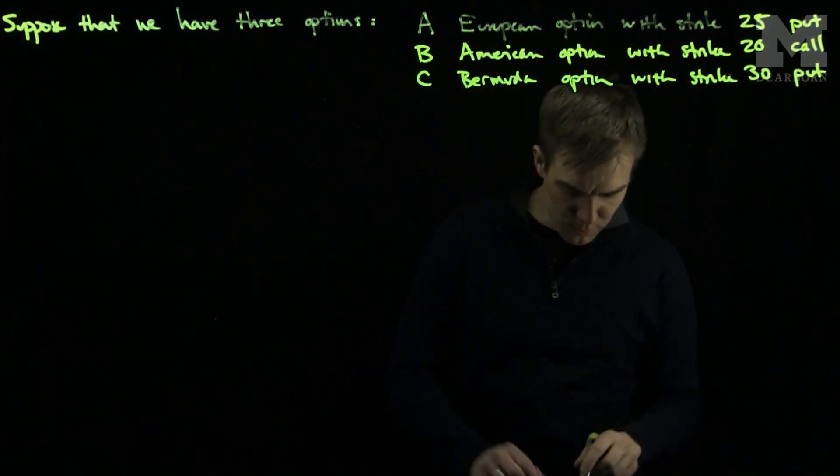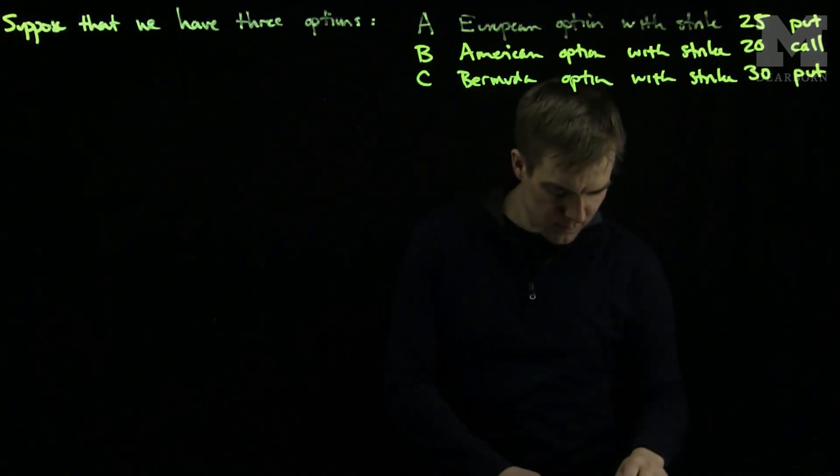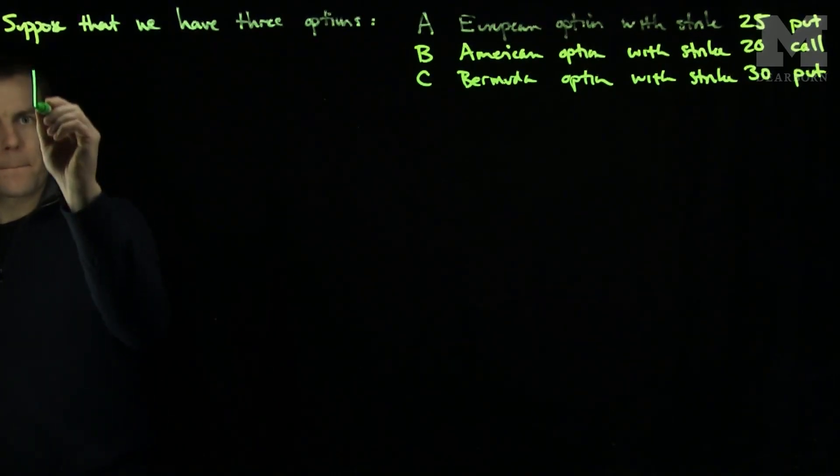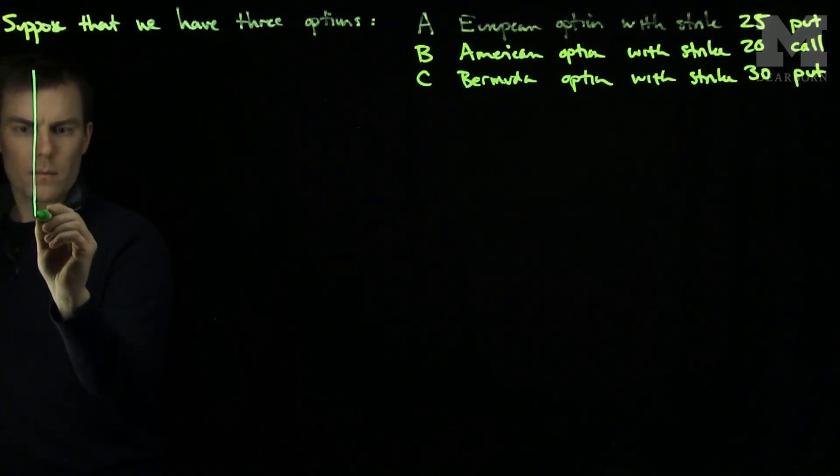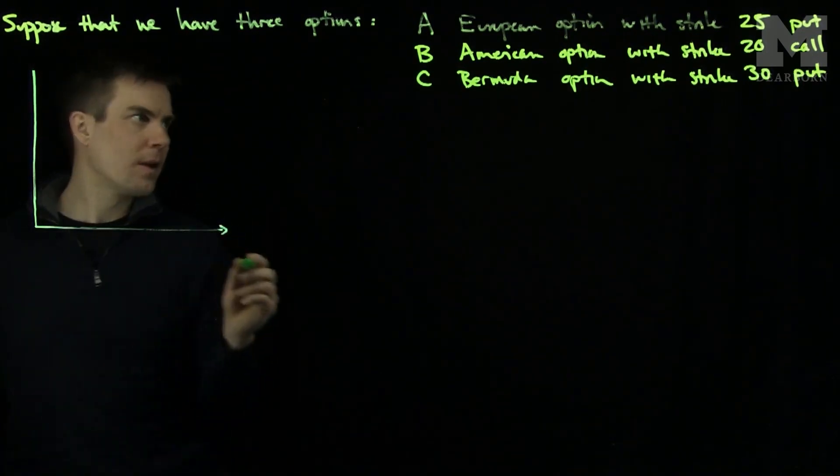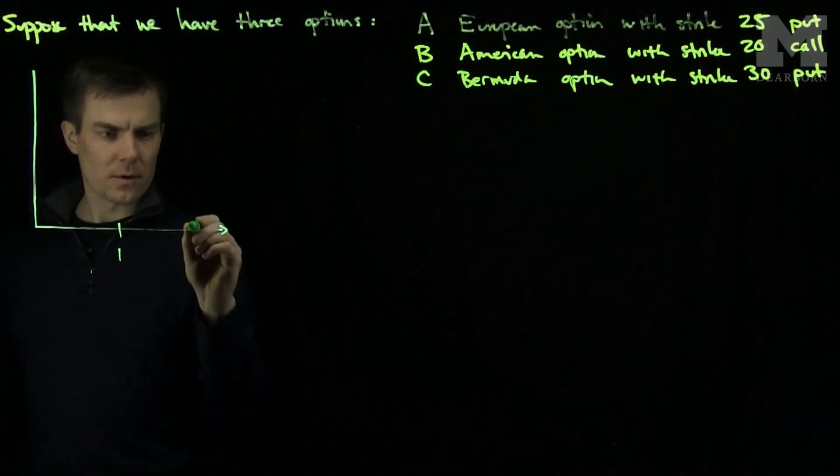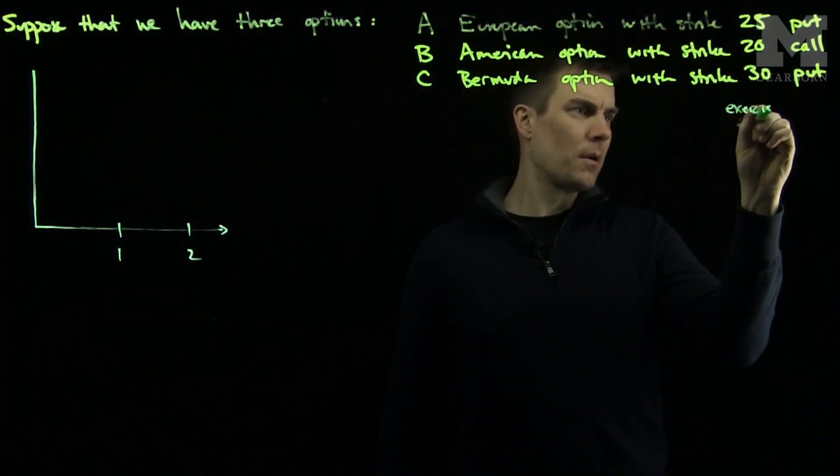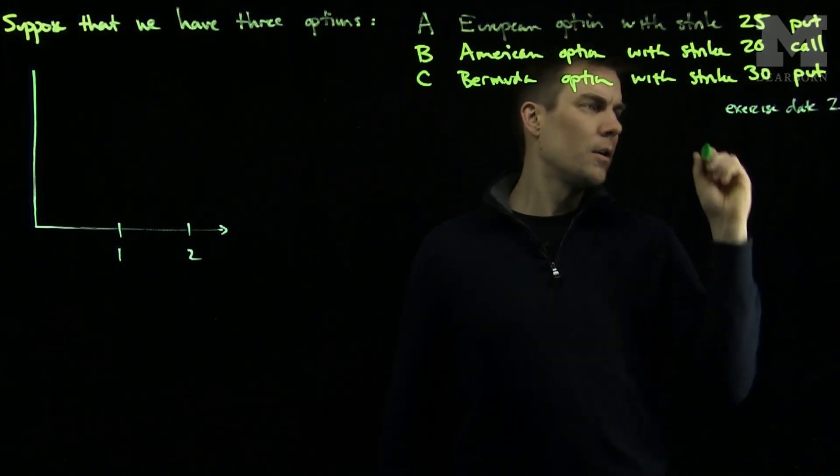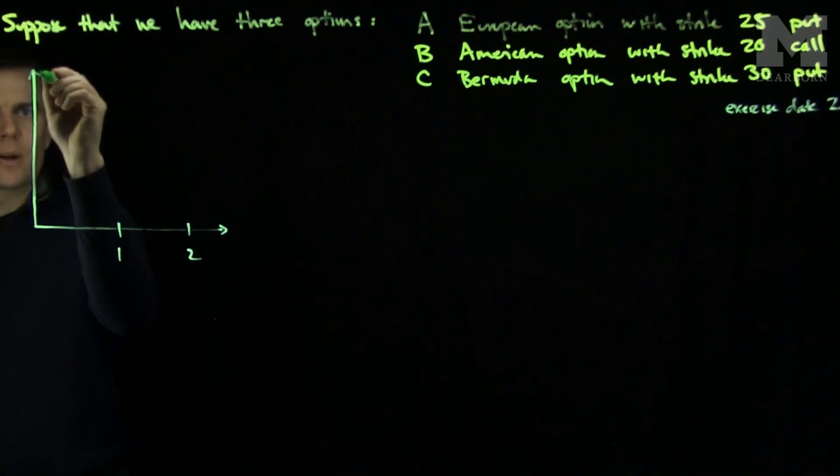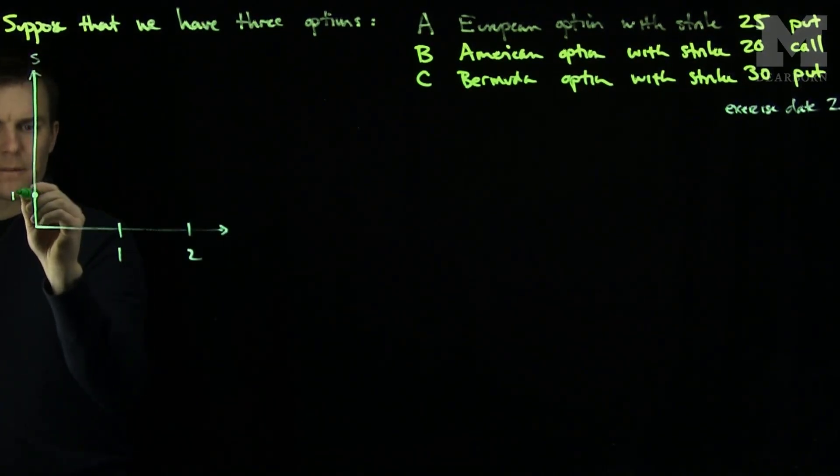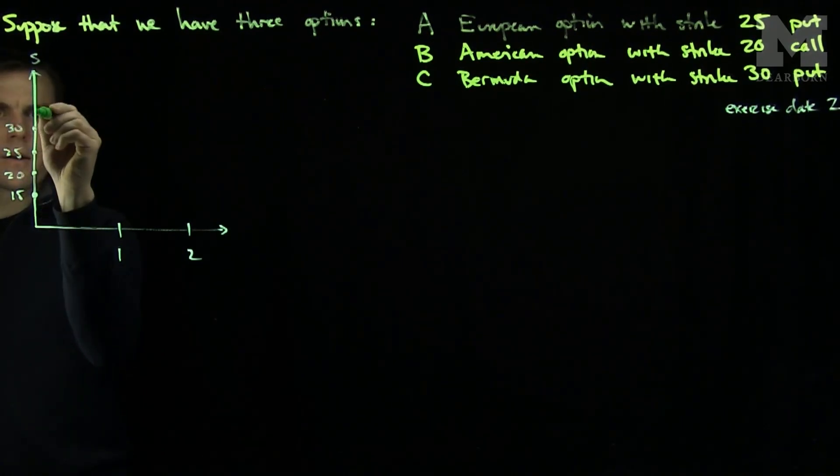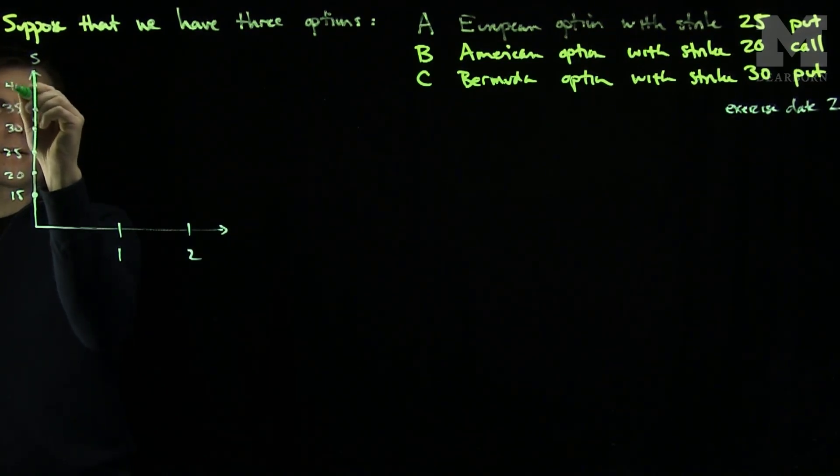Now we're going to suppose that we have a graph of the prices. Let's suppose these all have exercise date two years. Here will be our stocks. We have 15, 20, 25, 30, 35, and 40.